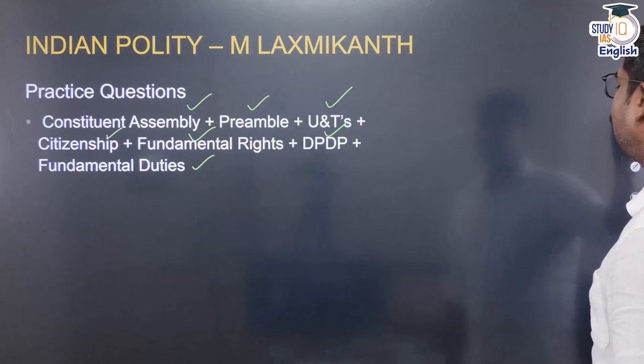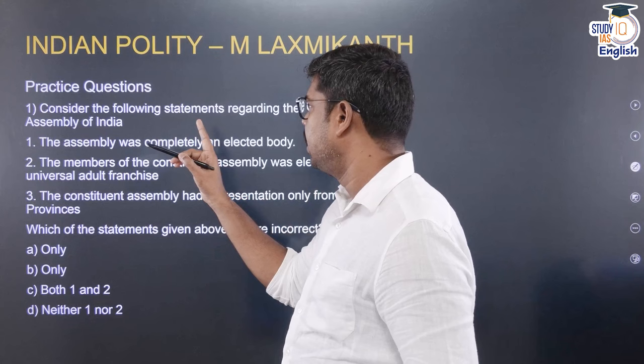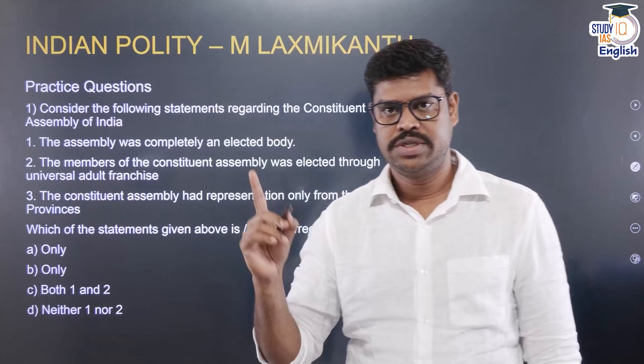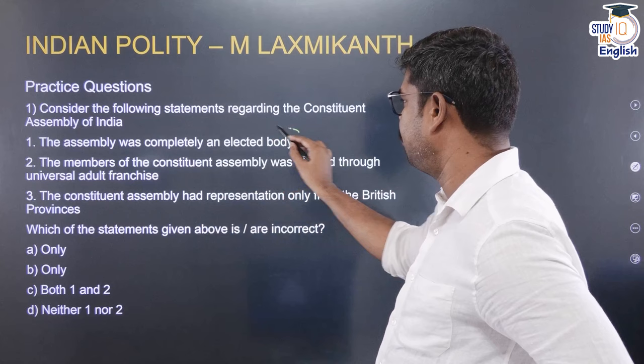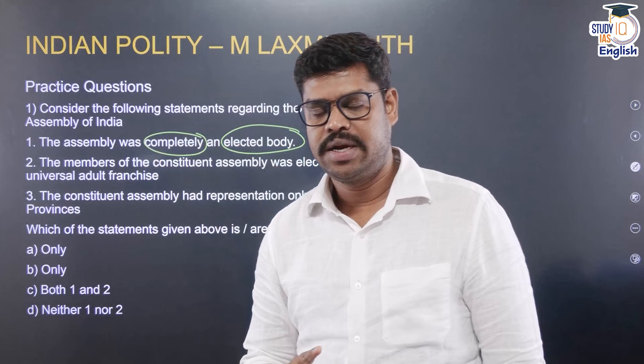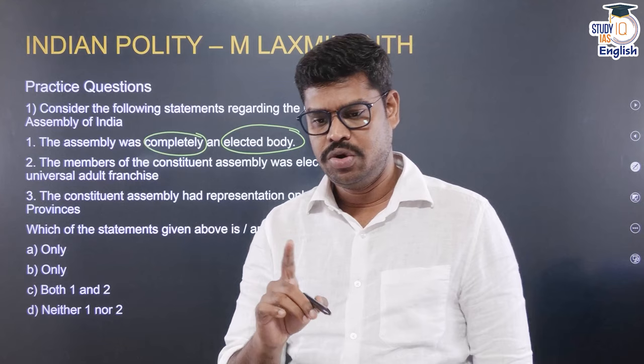Let me go to the first question. Consider the following statements regarding the Constituent Assembly of India. Statement 1: The assembly was completely an elected body. The key word here is 'completely' and 'elected body.' We have seen that it is not a completely elected body because there were a few nominations in the Constituent Assembly. So to say that it is a completely elected body is a wrong statement.